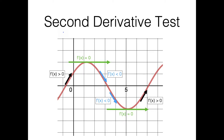In the previous video, we talked about the first derivative test, which, if you recall, is a way we basically took a critical point and decided whether it was a max, a min, or none of the above. In this video, we're going to be talking about the second derivative test, which is essentially going to do the same thing for us — take a critical point and tell us whether it is a max, a min, or none of the above.